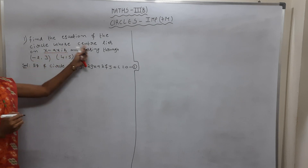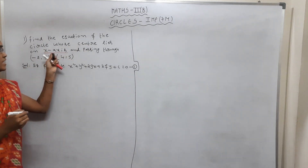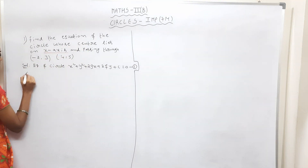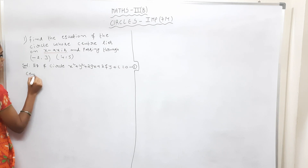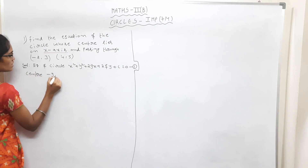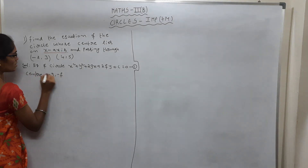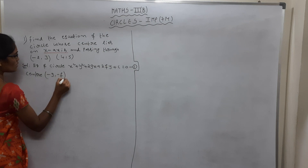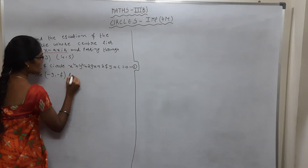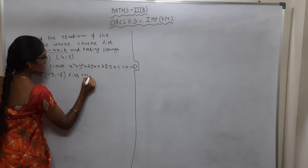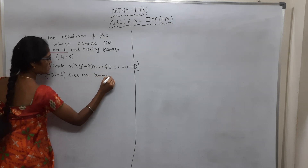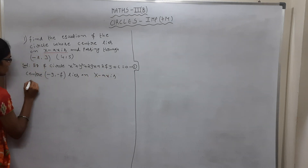This is the condition: the circle whose center lies on the x-axis. The center formula is (-g, -f), and the center lies on the x-axis.